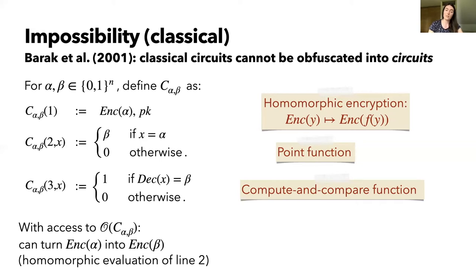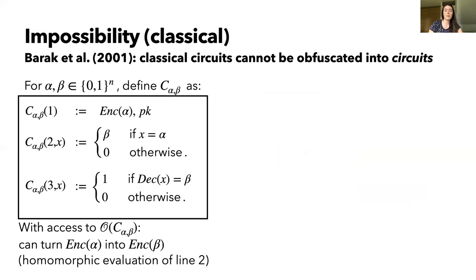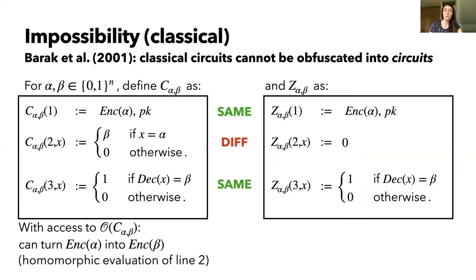Now for the second type of circuit Z: this circuit is identical to C except for the second line, where instead of a point function, it just always outputs zero. What this means in particular is that since there is no connection between alpha and beta anymore, if you try the same tactic as before, your third line will always end up in the otherwise case, outputting zero. You will not be able to recover a valid encryption of beta if you have access to the Z functionality, not even if you have a physical obfuscation in your hand.